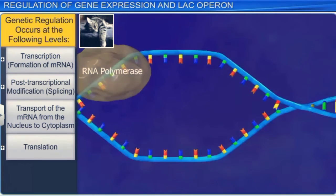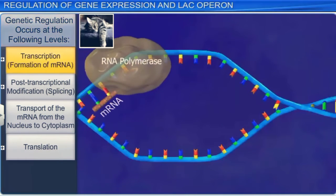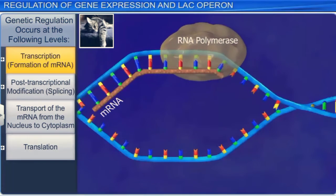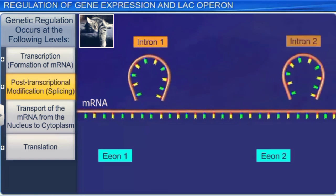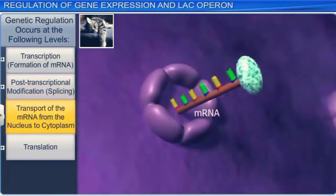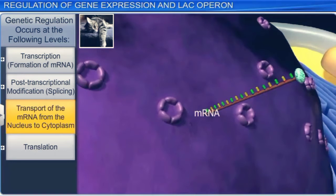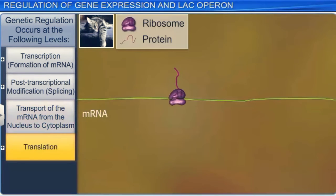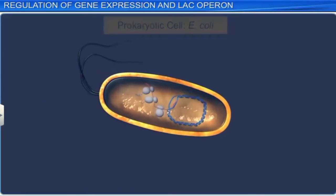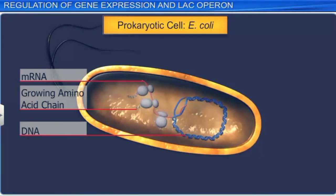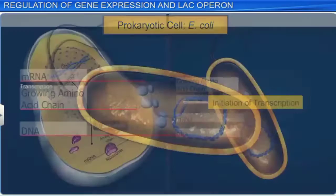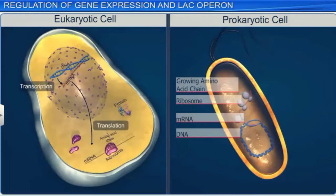In cats and other eukaryotes, genetic regulation occurs at the following levels: transcription, post-transcriptional modification, transport of the mRNA from nucleus to cytoplasm, and translation. While in prokaryotes such as E. coli, the predominant site of gene regulation is the initiation of transcription. Therefore, gene expression is regulated differently in eukaryotes and prokaryotes.